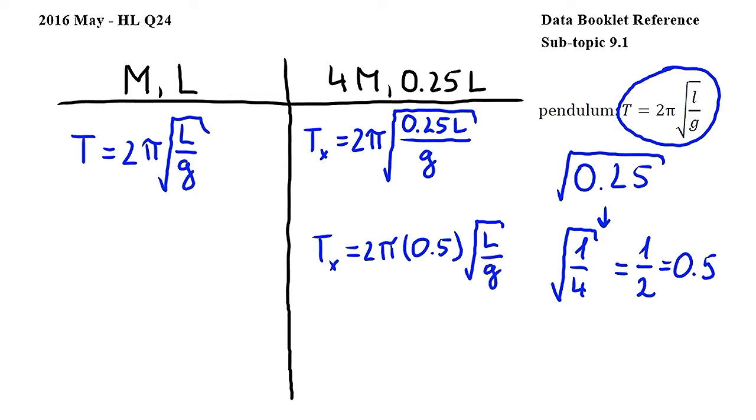From this we can clearly see that Tx, the new period, is half of T so it is equal to 0.5T making a the correct answer.